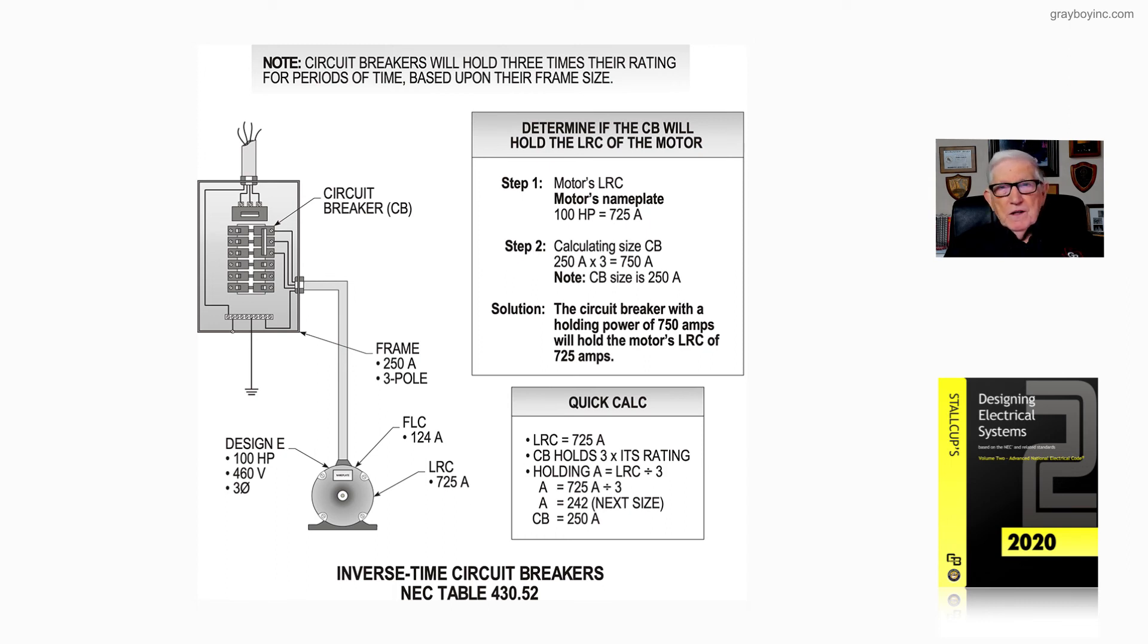The code just gives you maximum and minimum values. Table 430.52 is just giving you a percentage to start with. You can always round it down, but you can't round up without having an exception to let you do so. That's important for engineers and electricians to understand.